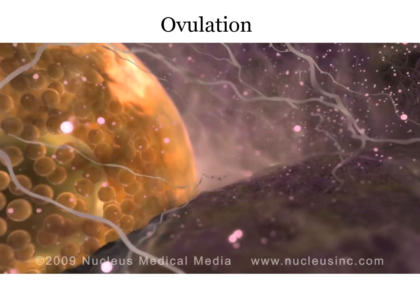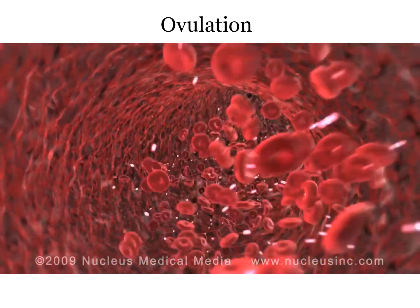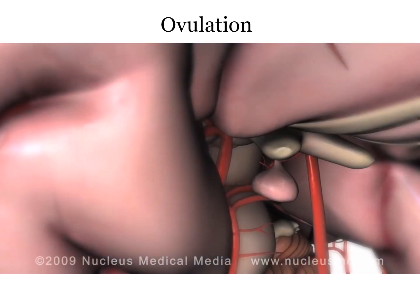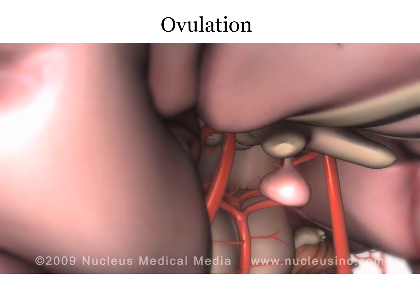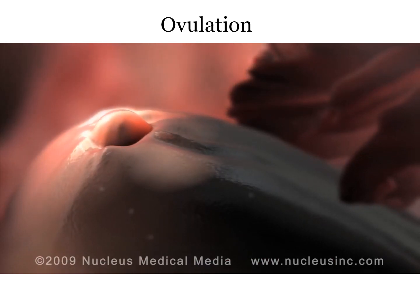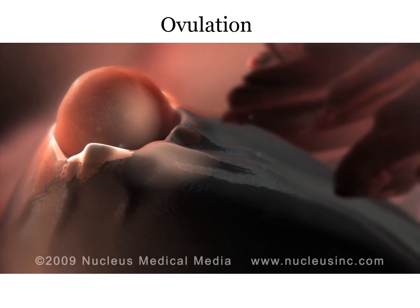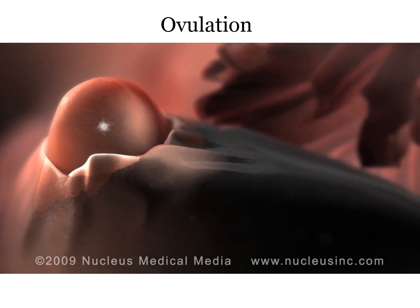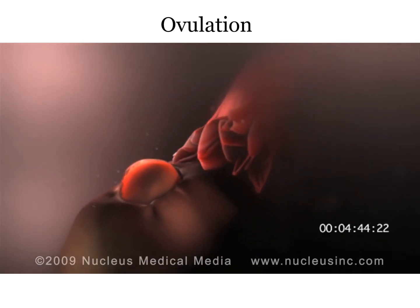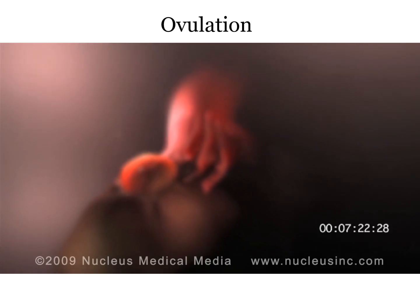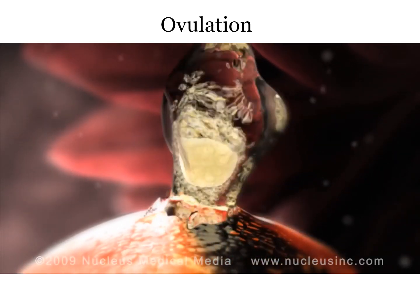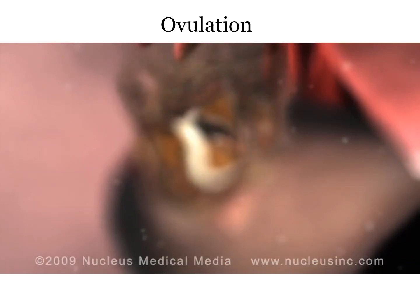Around day 12, the follicle secretes a large amount of estrogen into the bloodstream. When the estrogen reaches the hypothalamus and the pituitary gland in the brain, the anterior part of the pituitary gland releases a huge surge of luteinizing hormone into the bloodstream. Around day 14, luteinizing hormone causes the follicle to undergo a sudden growth spurt. Right before ovulation, the egg detaches from the inside of the follicle. The bulging follicle releases chemicals, causing one of the two fallopian tubes to move in closer and surround the follicle. The follicle swells until it bursts open, ejecting the egg and fluid into the abdominal cavity.